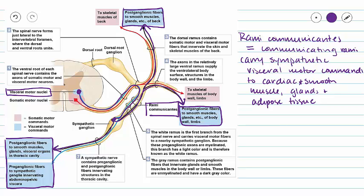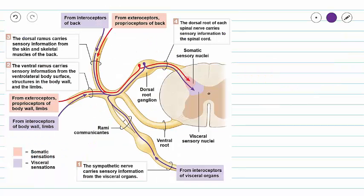I also like this picture because it shows us our dorsal root going to the skeletal muscles of our back, and our ventral root going to the skeletal muscles of our body wall and limbs. This picture shows us the same thing, except we are carrying sensory information from our organs through our rami communicans and into our posterior gray horn.